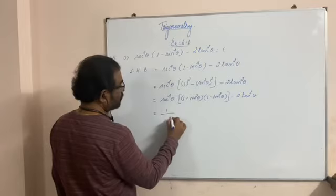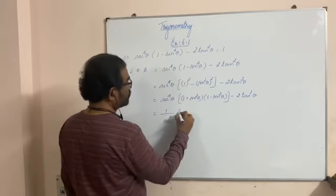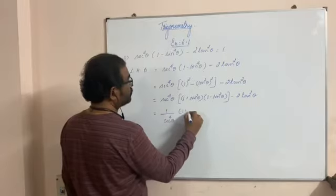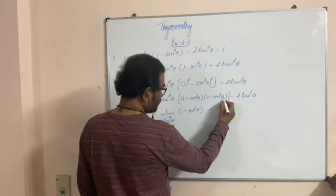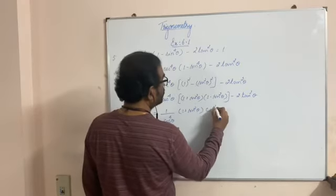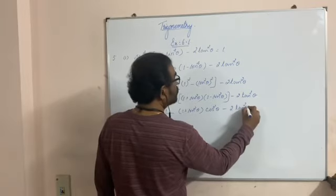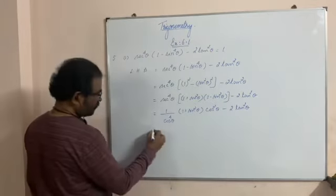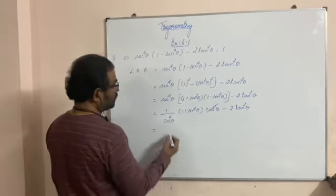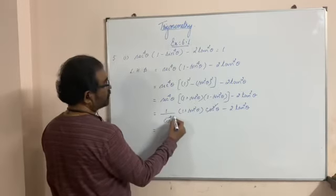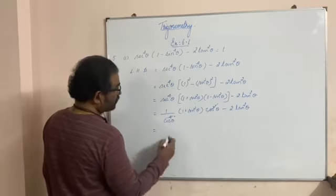Then minus 2tan²θ. Now 1 minus sin²θ equals cos²θ. So here we have a cos²θ, and sec⁴θ is 1/cos⁴θ. We can cancel a cos² term, leaving 1/cos²θ.